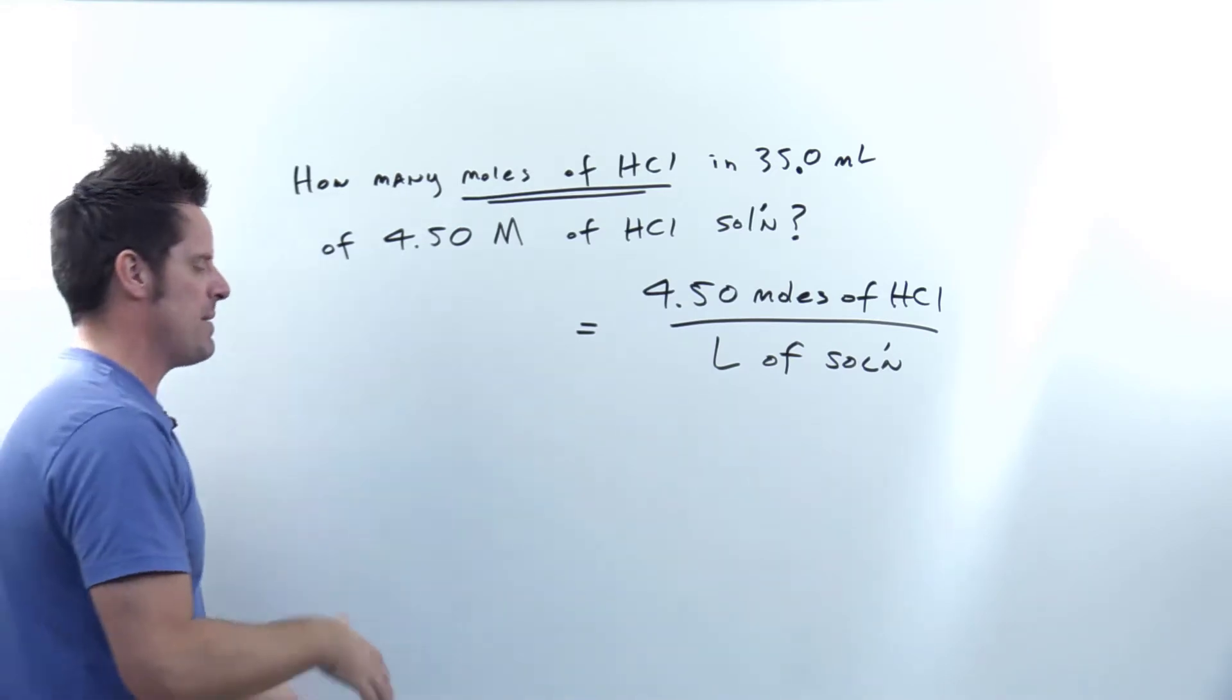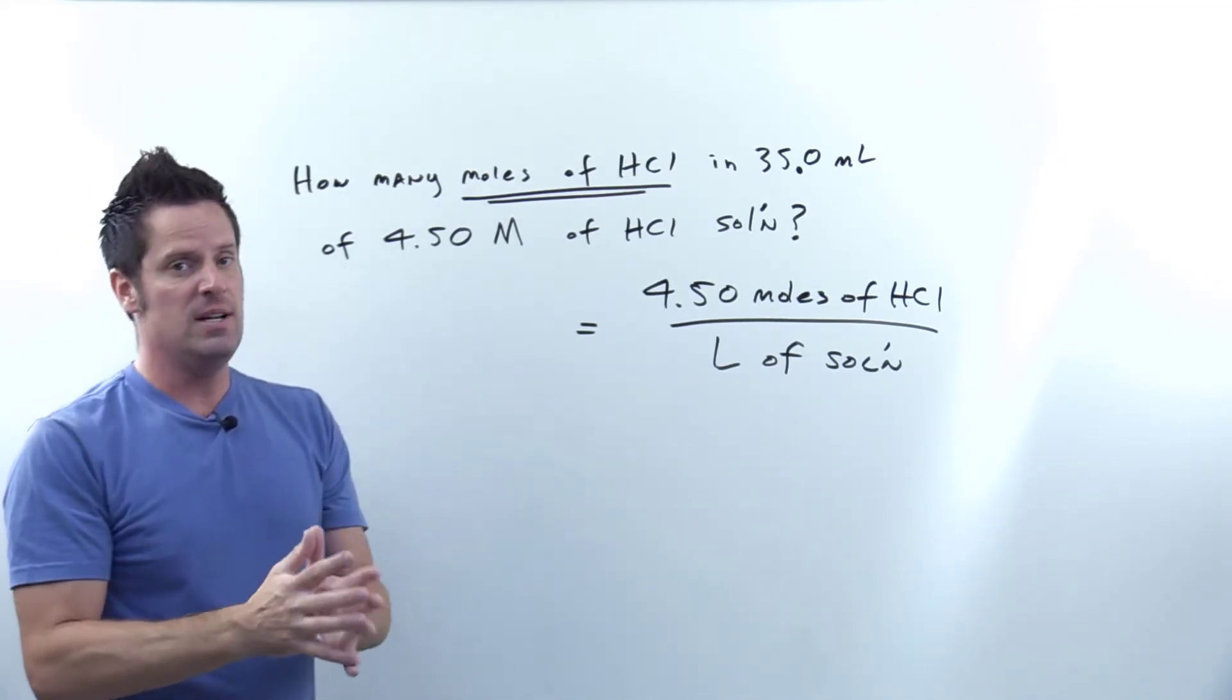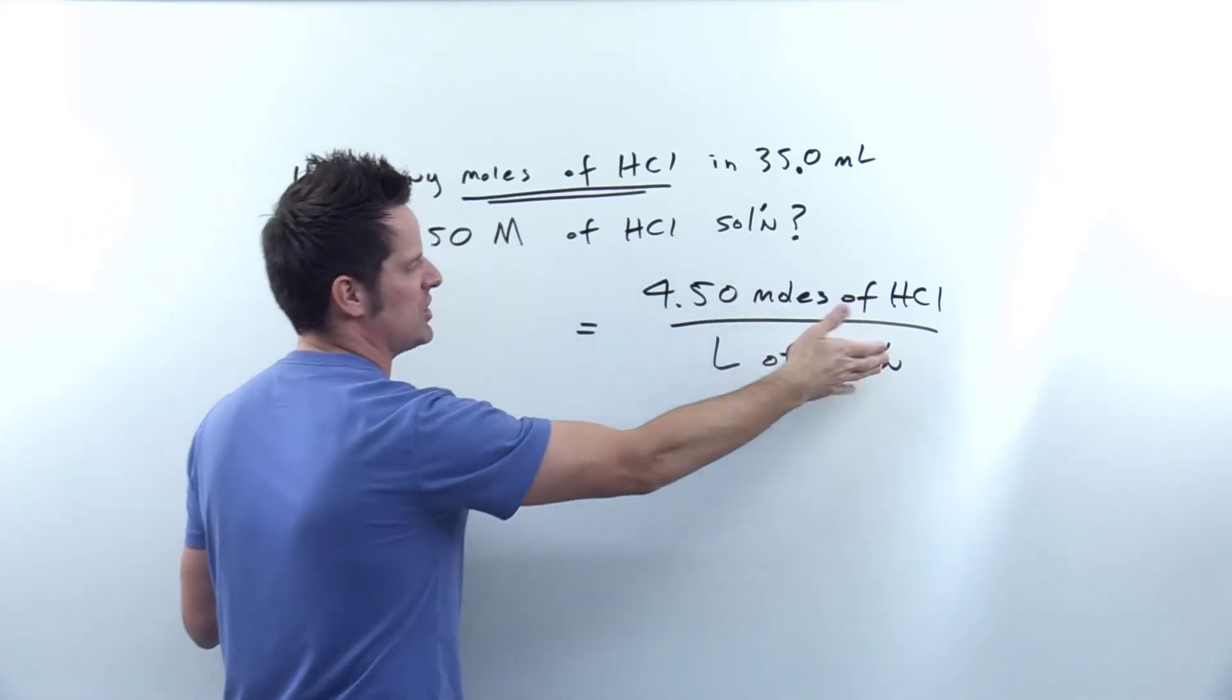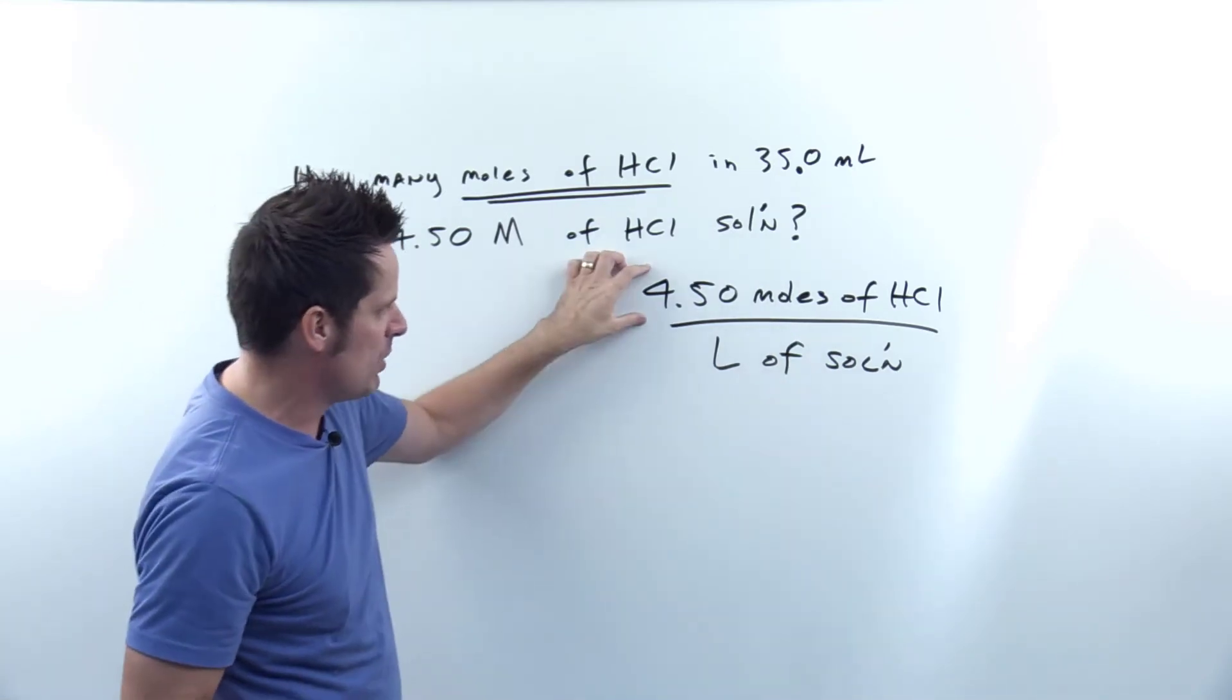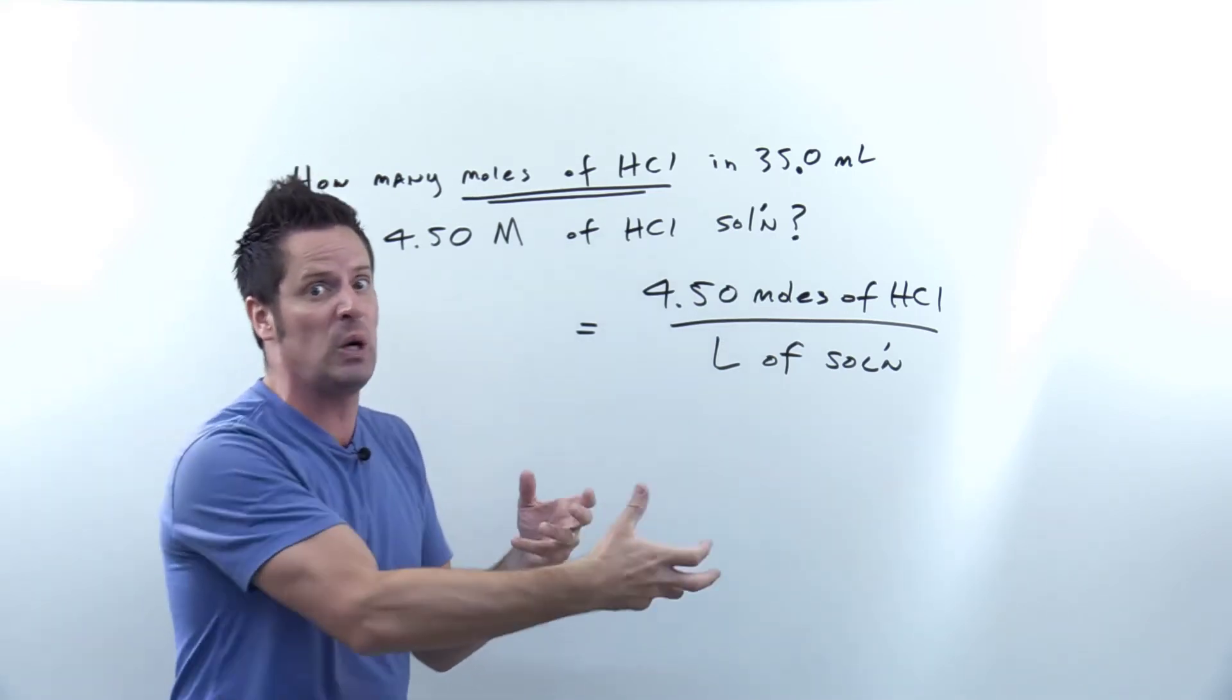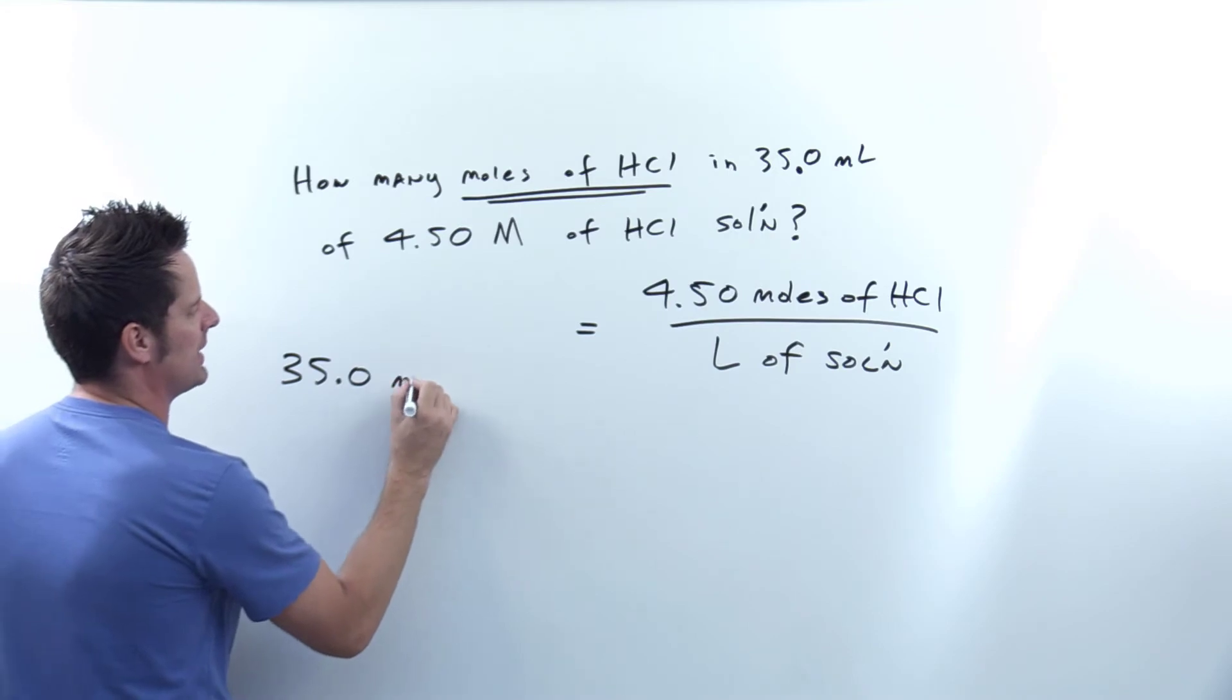So whenever I'm dealing with a problem that's a dimensional analysis slash unit conversion problem that gives me multiple different values in the question, most of the time, not always, but the vast majority of cases, the value that you want to start with is the one that has no denominator units. Over here, I've got a value, this capital M, that really is an abbreviation for moles of HCl divided by liters of solution. It has denominator units because there's units in the denominator. There's a numerator and a denominator. This value, however, does not have denominator units. 35.0 milliliters isn't 35.0 milliliters per something. There's not a denominator. It's just 35.0 milliliters. So I'm going to write that down. And if you write it down truly in what it is actually saying, it's 35.0 milliliters of this solution.